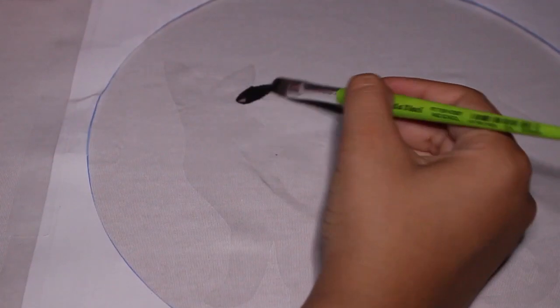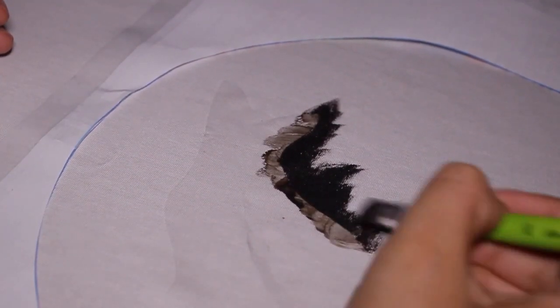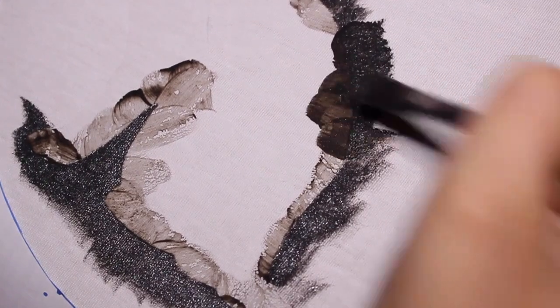Once I placed the cat where I wanted it, I started painting the shirt. Contact paper is pretty safe but I made sure to paint towards the outside of the template to avoid smudges.